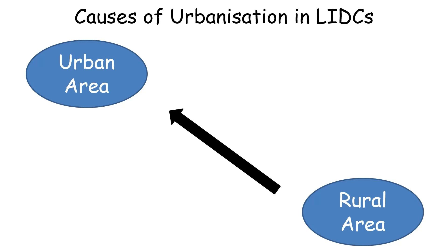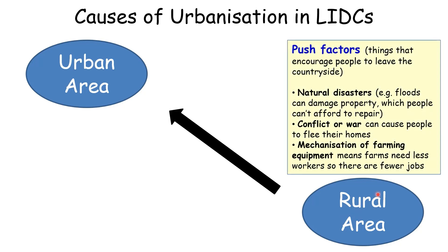In low income developing countries, the urbanisation has occurred since about 1950. In the countryside rural areas, there are negative factors that make people want to move, known as push factors. The first example is natural disasters. If floods or earthquakes occur within the countryside, people and their property will be damaged — they might have lost their fields or their farm equipment — and so they move to the urban area searching for jobs which they've lost within the countryside. Another push factor could be conflict or war, causing people to flee their homes.